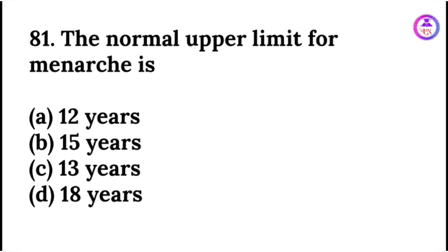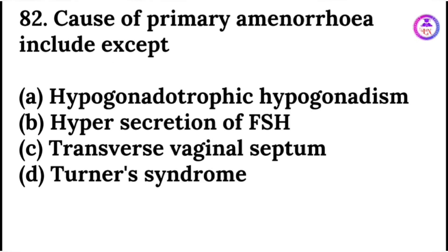The normal upper limit for menarche is 15 years. Causes of primary amenorrhea include — except: hypersecretion of the follicle stimulating hormone.